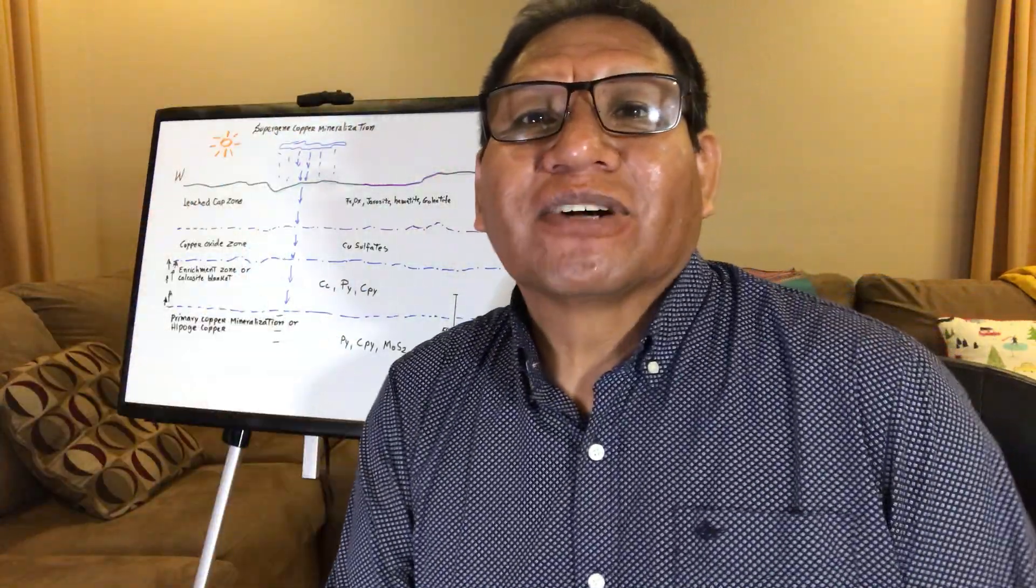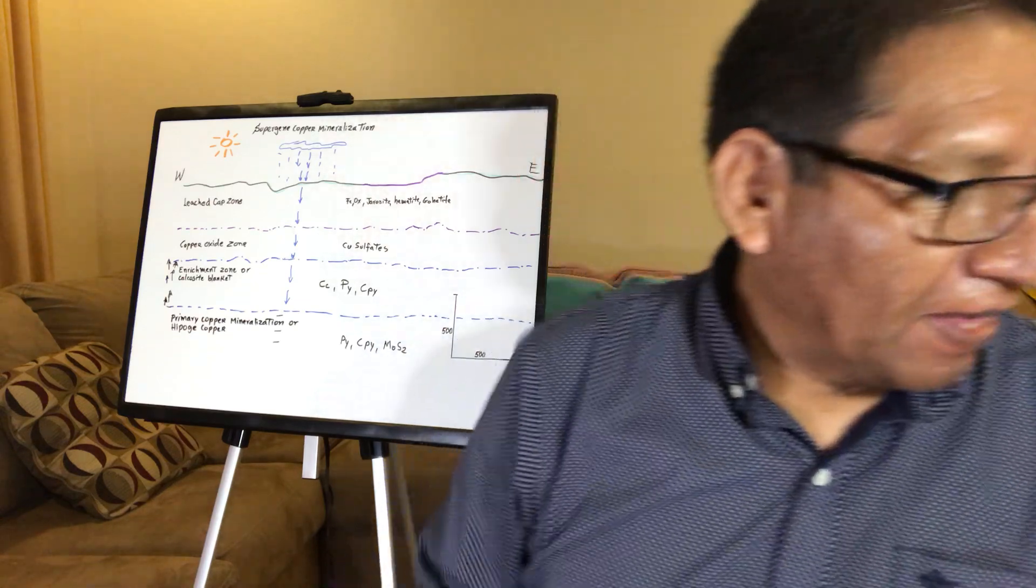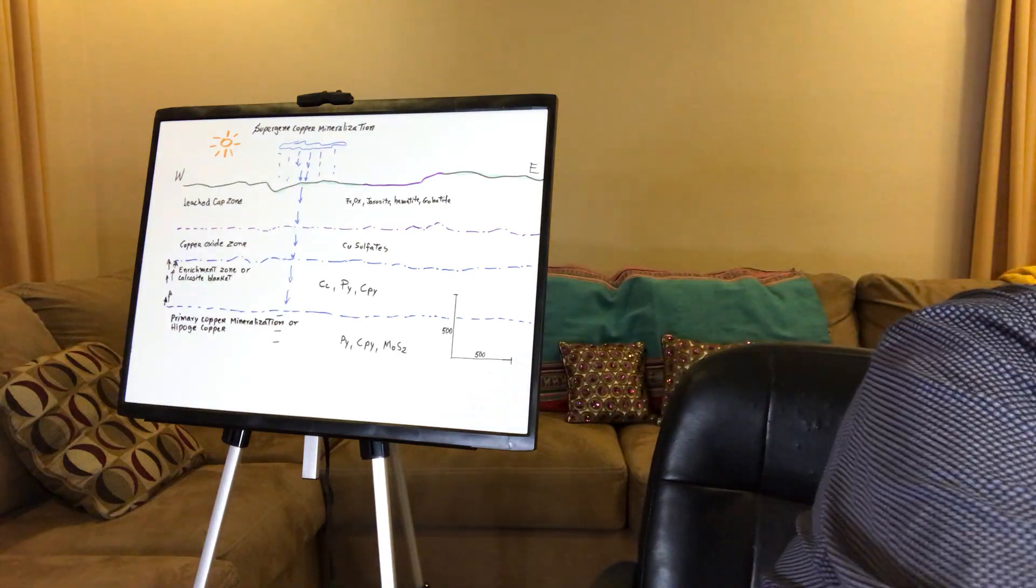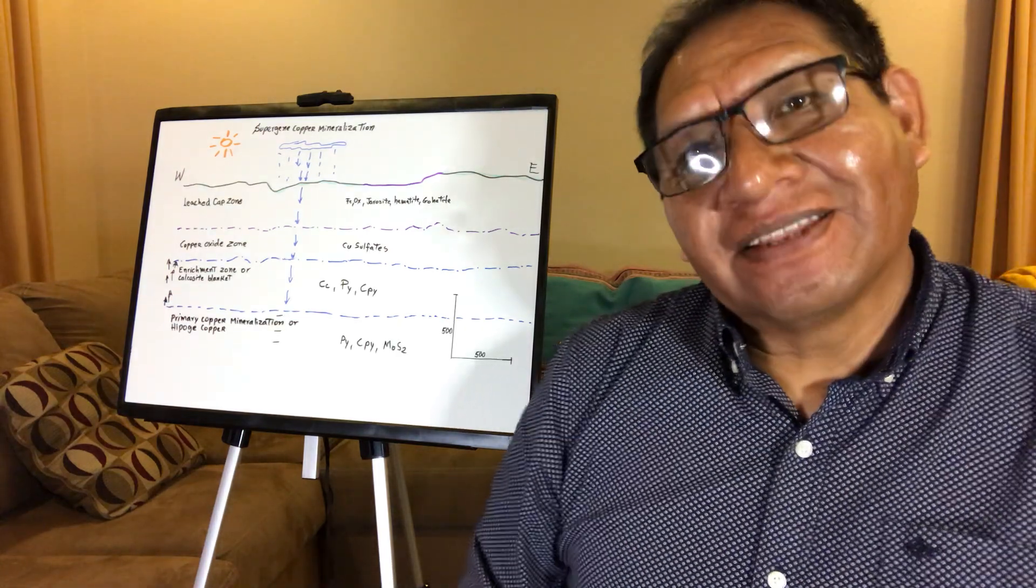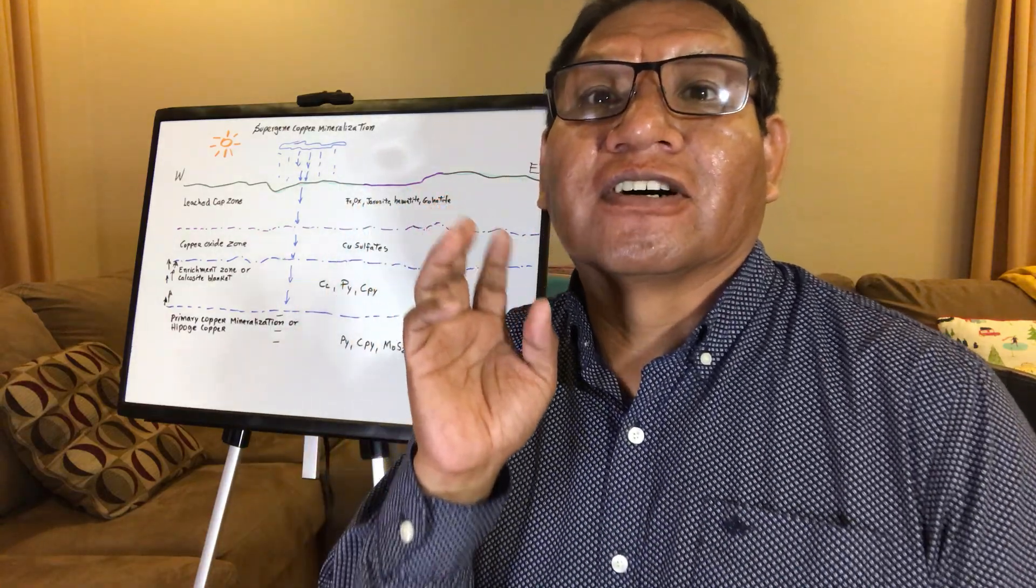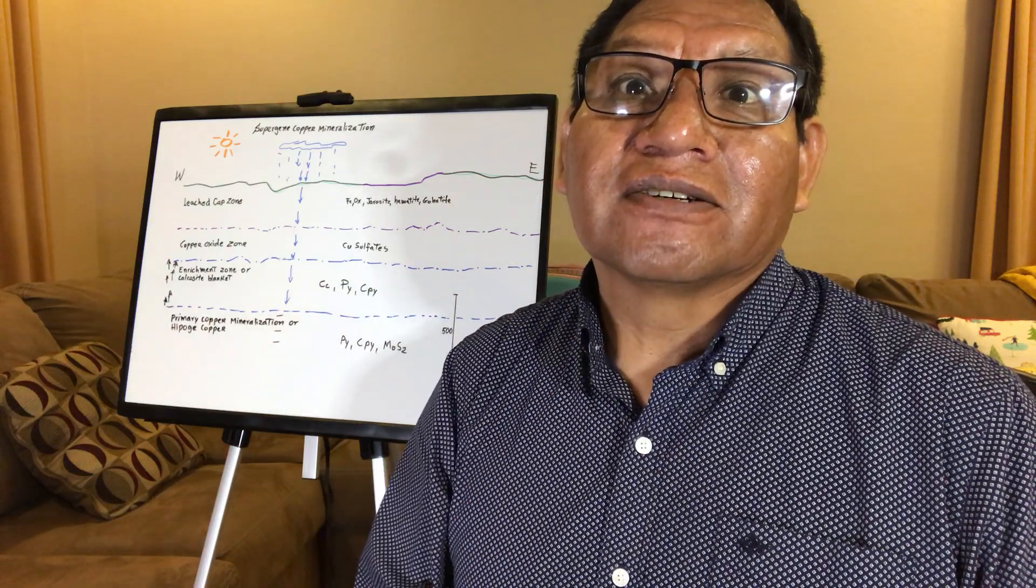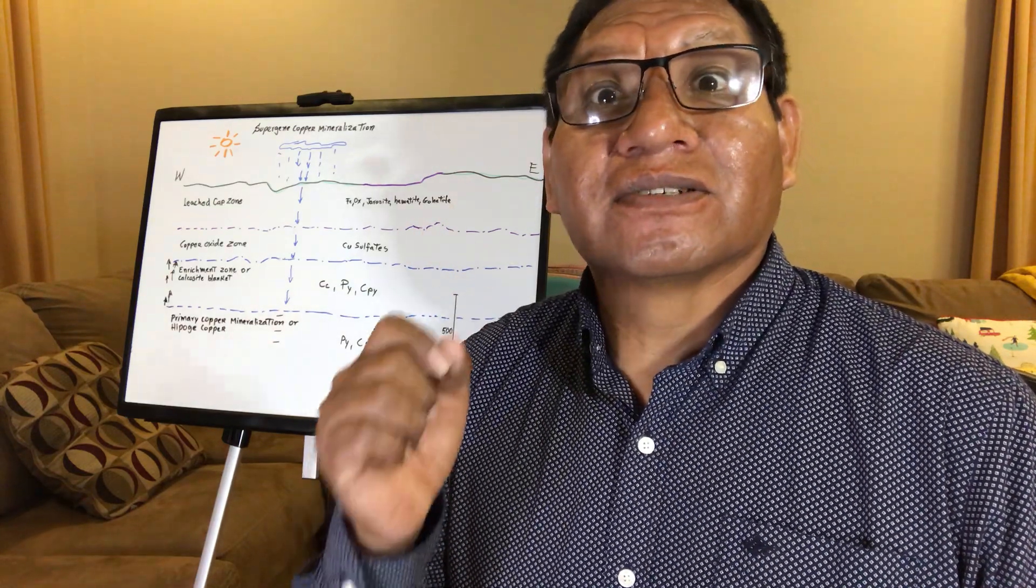Hello, this is Sebastian Mollapasa from Tucson, Arizona, United States, and this time we're going to talk about how to recognize secondary enrichment in the porphyry copper systems. And we already said in the porphyry copper systems there are two types of process of mineralization. One is the primary mineralization and the second process is the supergene process or secondary mineralization.